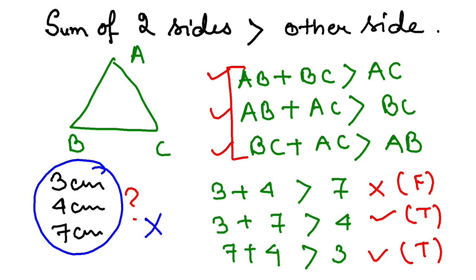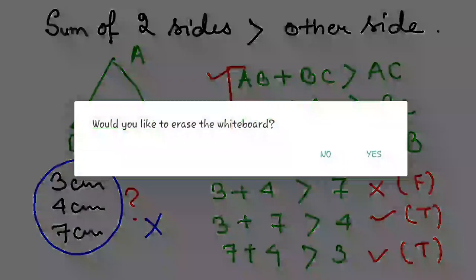I think you have understood. Let me take another example so that you can understand better. Let's say I have three sides: 4, 5, and 6. Will they form a triangle? Let's try to check the conditions.